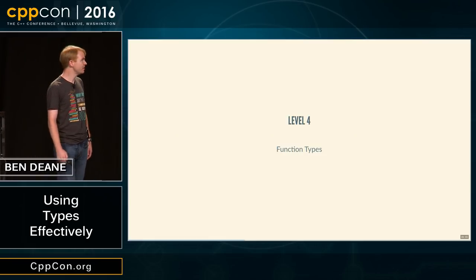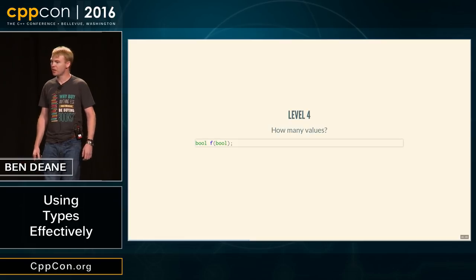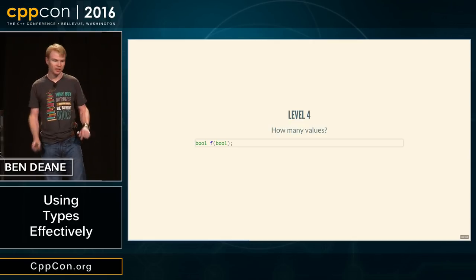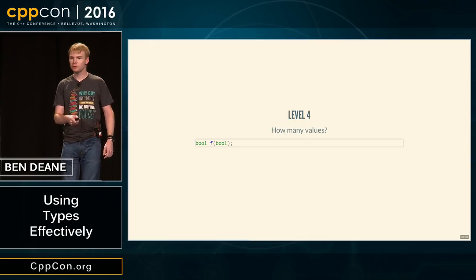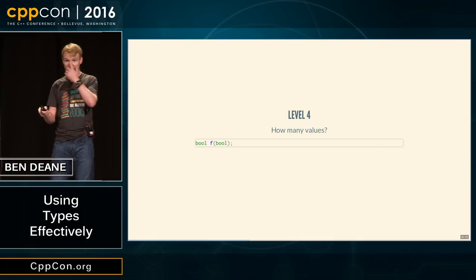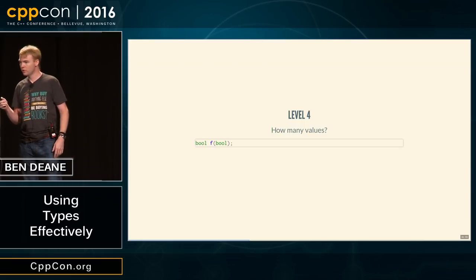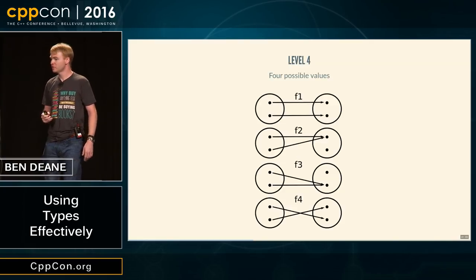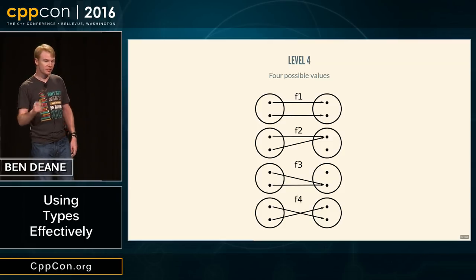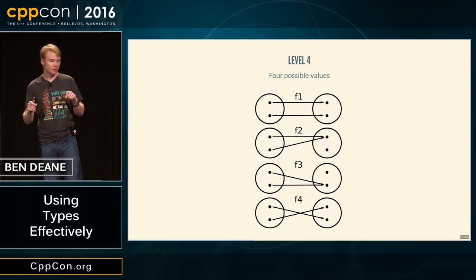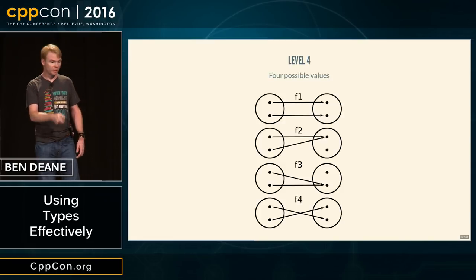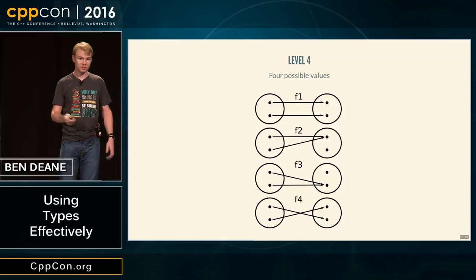Level four is a little harder. How many values — meaning how many different ways can we write function f from bool to bool? Four is the answer. Here are the four ways we could write the function: we're saying different numbers of ways to draw arrows between inputs and outputs. In C++ these four functions might look like: always return true, always return false, identity, and complement.